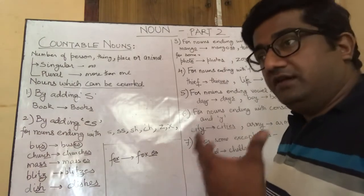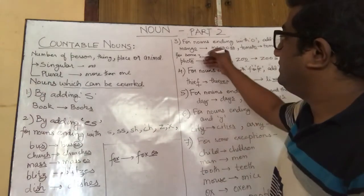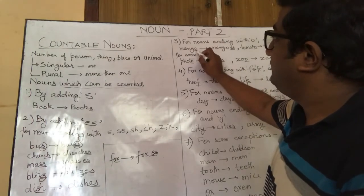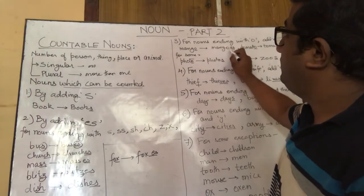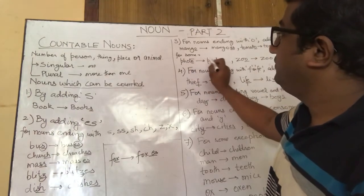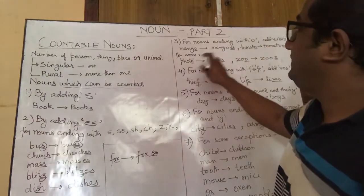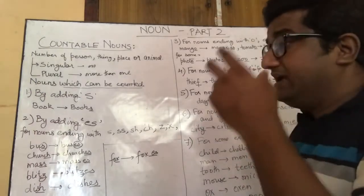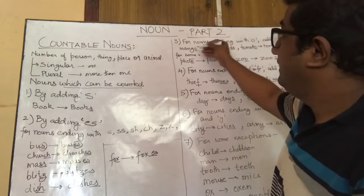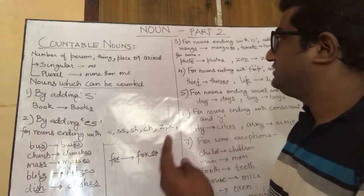You have to learn these as you go along, as you study. There is no specific rule, because both mango and photo end with O, but mango becomes mangoes (M-A-N-G-O-E-S) while photo becomes photos (P-H-O-T-O-S). So there is no specific way to determine whether ES or S will be applied when a noun ends with O — you have to learn that as you study.